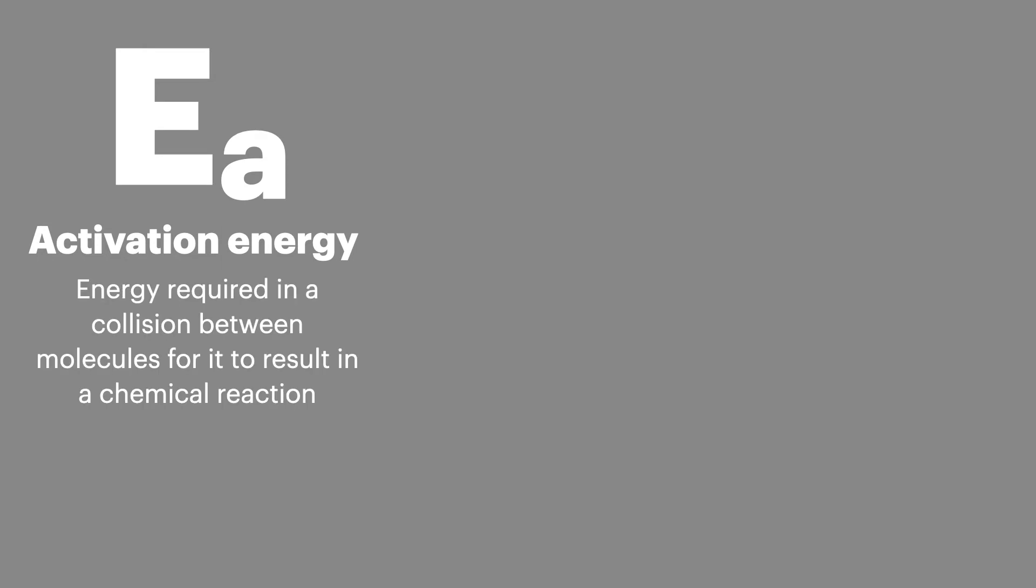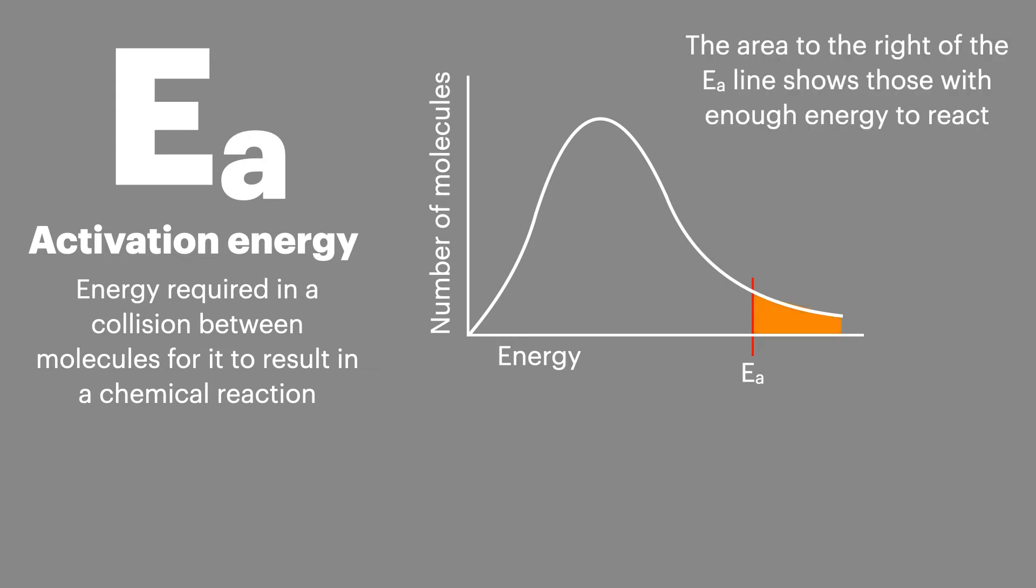As we previously mentioned, the activation energy is required for a successful chemical reaction to take place when two molecules of reactant collide. We can show you this on the Maxwell Boltzmann curve. The activation energy is marked on the curve and the area to the right of the activation energy line shows the molecules that will react when they collide. As you can see this is a relatively small amount of molecules.